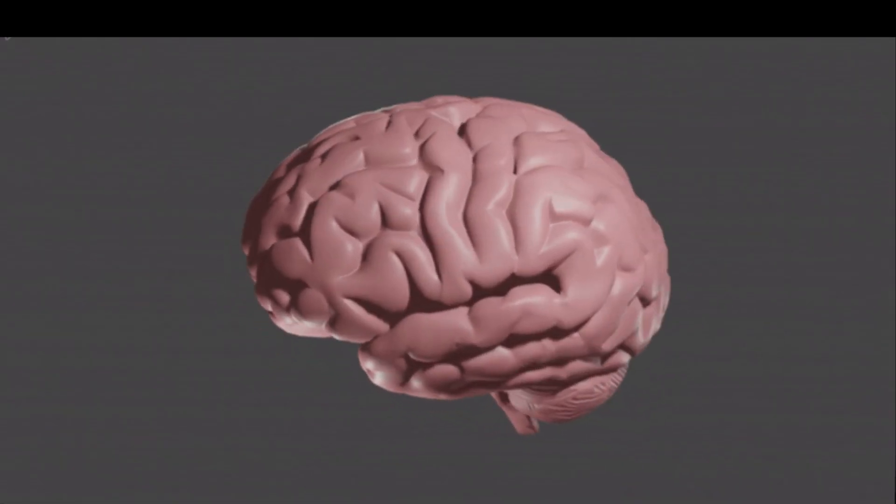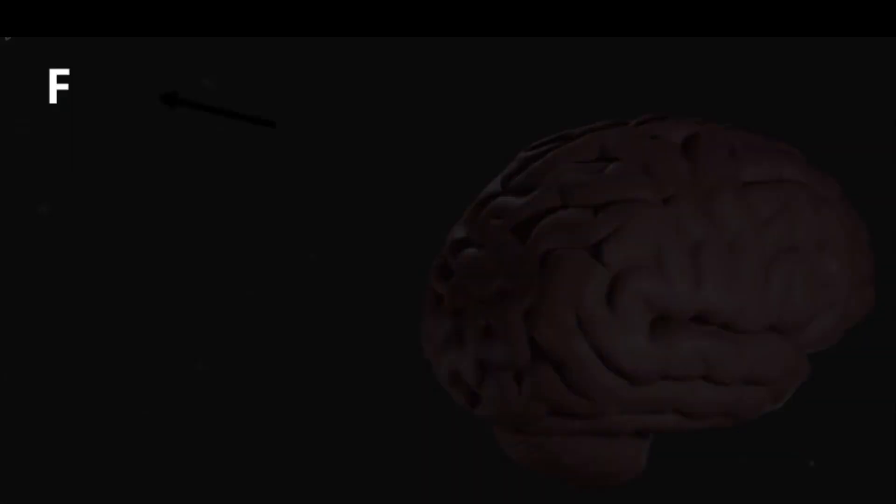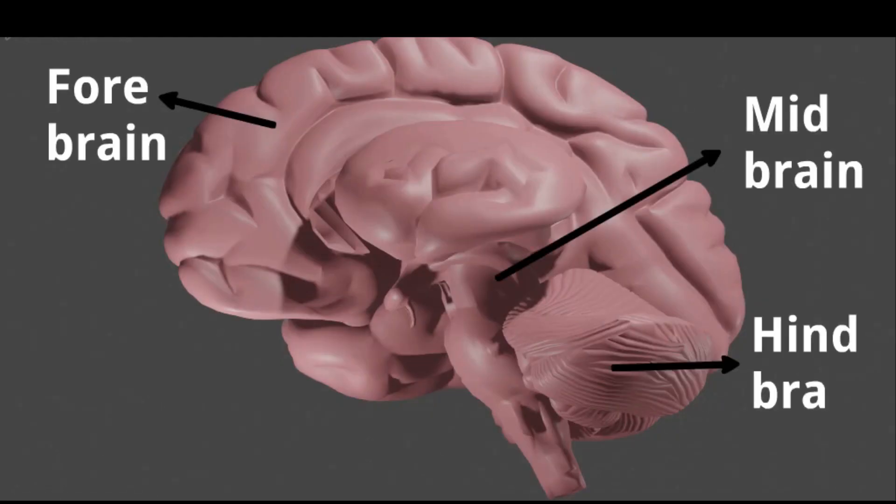The human brain consists of billions of interneurons. It is divided into the following parts: forebrain, midbrain, and hindbrain.